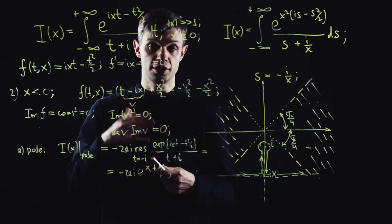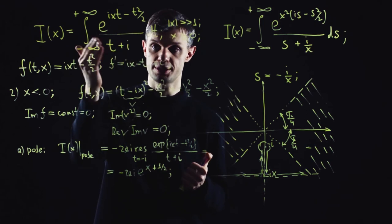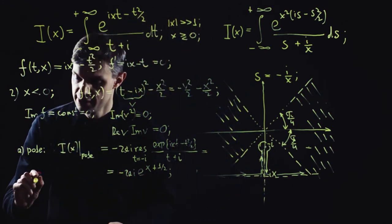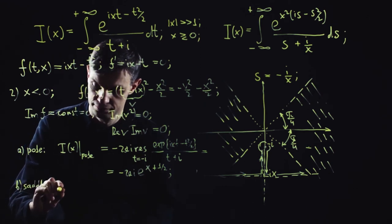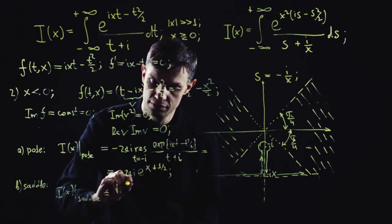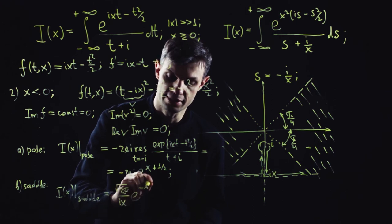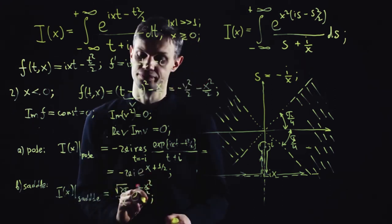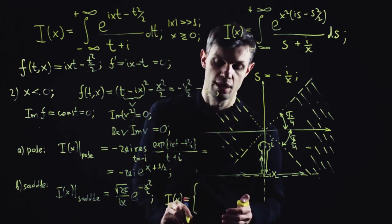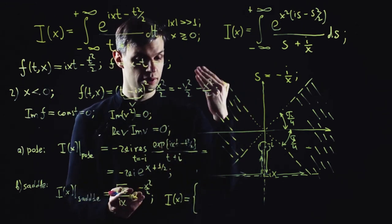The contribution from the saddle is going to be identical as in the case of large and positive x. As before, the usual trade-off takes place. There will be no large factor in the exponent function, but there will be a large factor in the pre-exponential function. The resulting integral will be reduced to a Gaussian one, simplified and easily taken. We get square root of 2πi divided by ix times e^(minus x squared over 2). The full asymptotics at large negative x is simply given by the sum of the two contributions from the pole and from the saddle.